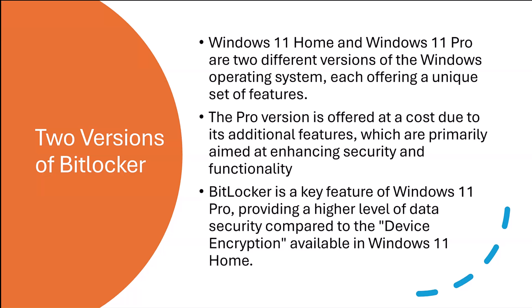Two versions of BitLocker. Windows 11 Home and Windows 11 Pro are two different versions of the Windows operating system, each offering a unique set of features. The Pro version is offered at a cost due to its additional features, which are primarily aimed at enhancing security and functionality. BitLocker is a key feature of Windows 11 Pro, providing a higher level of data security compared to device encryption available in Windows 11 Home.